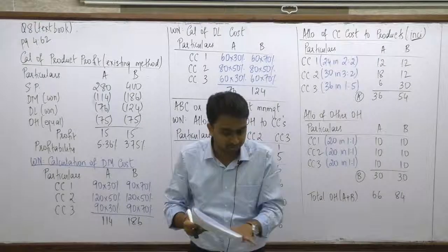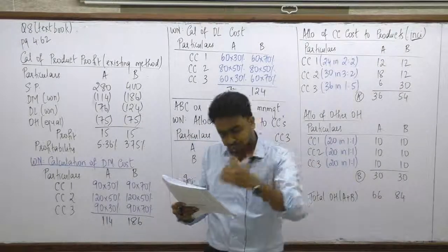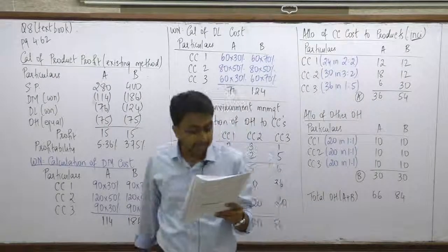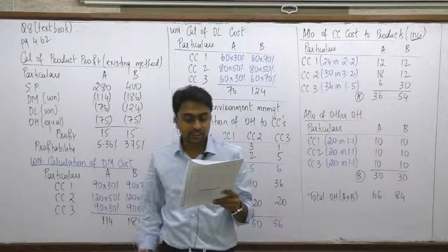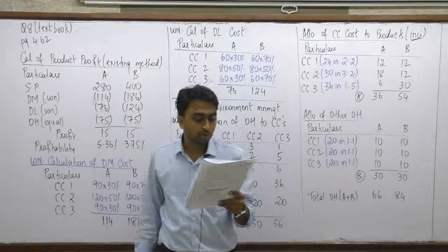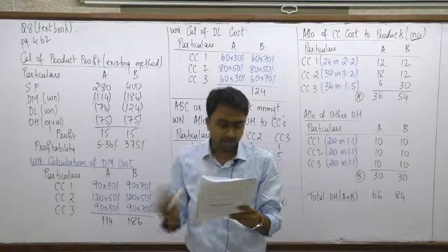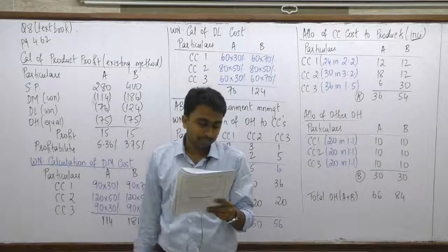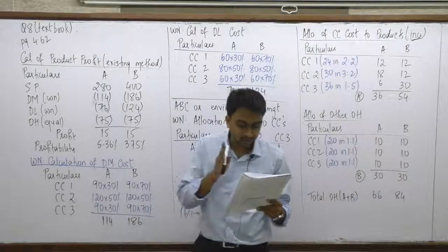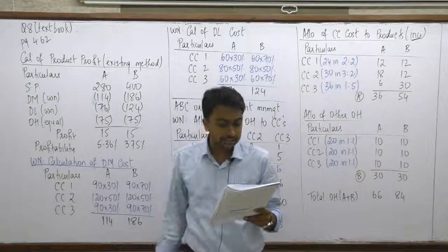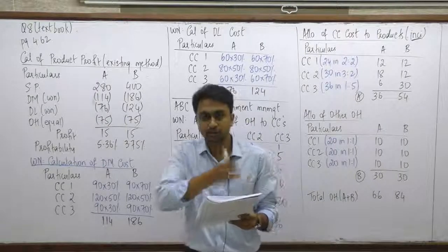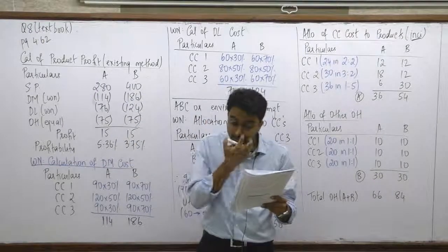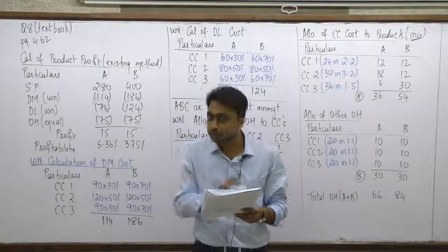Starting with the question: there's a company which makes Grade A and Grade B fertilizers. 1 kg of Grade A sells for ₹280, and 1 kg of Grade B sells for ₹400 per kg — those are the pure selling prices. The products pass through three cost centers — Cost Center 1, Cost Center 2, and Cost Center 3 — during the manufacturing process.